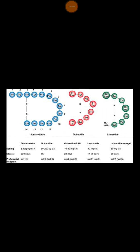There are many types of somatostatin analogue, and we categorize them broadly into three types: somatostatin, octreotide, and lanreotide. Each type has a different affinity to different somatostatin receptors, but all of them mainly work on somatostatin receptor number two and number five.